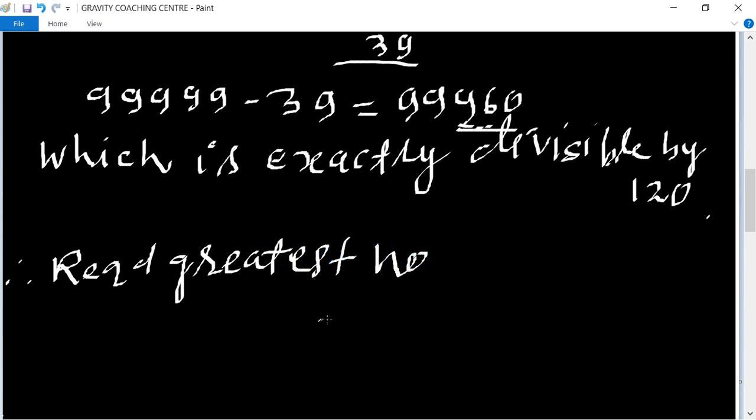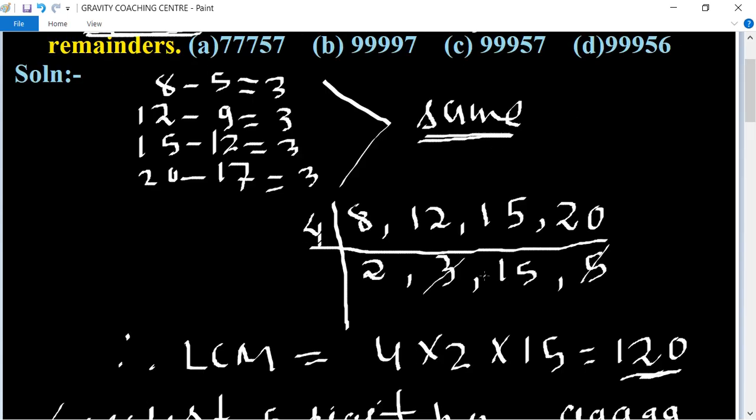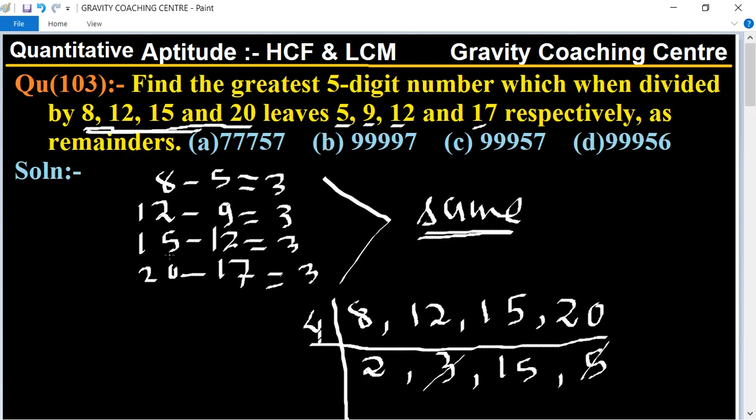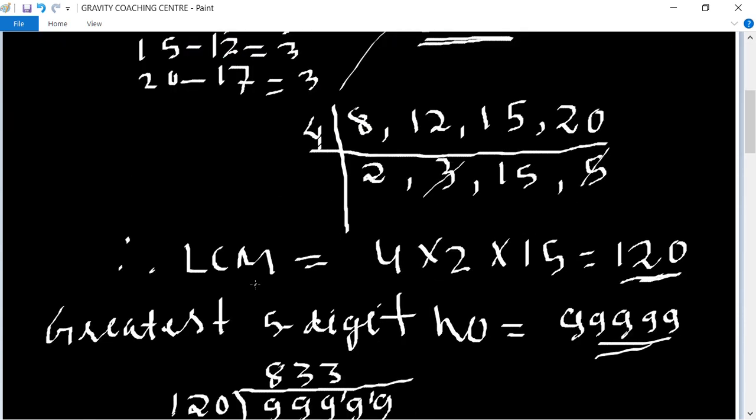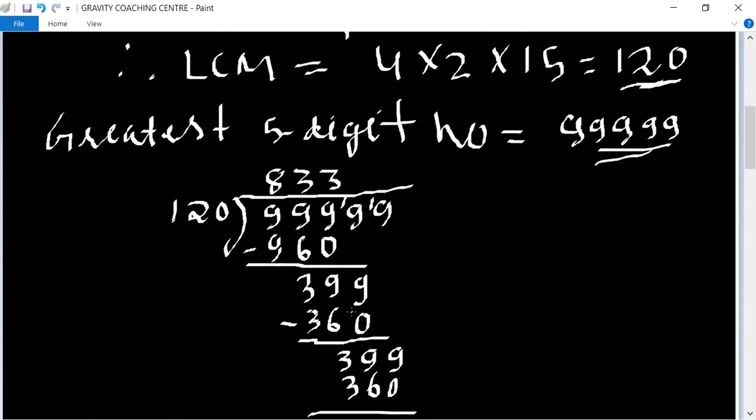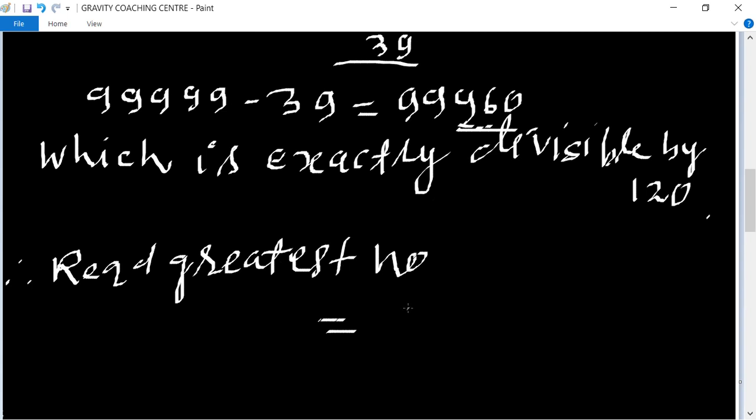So the required greatest number equal to 99960 minus 3, which equal to 99957, which is the required answer.